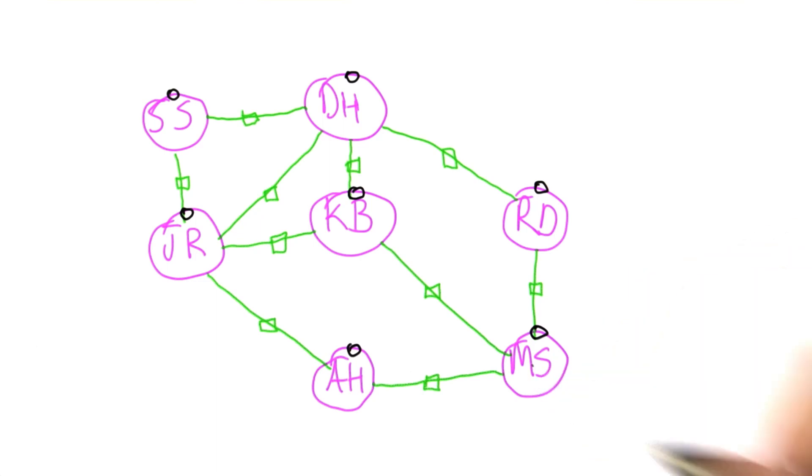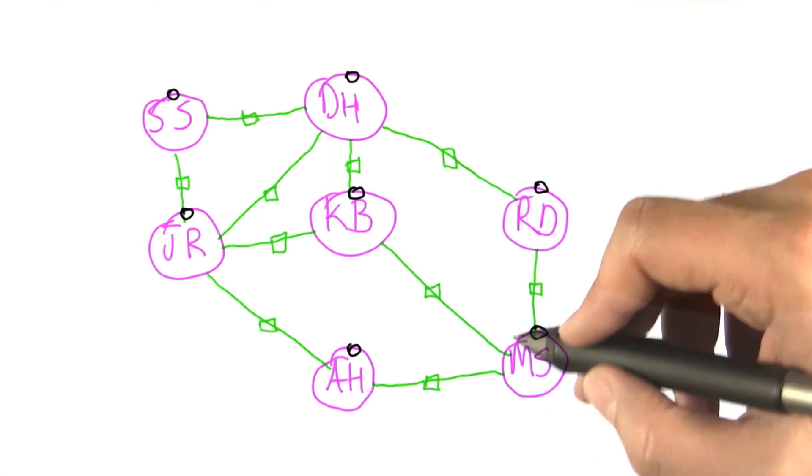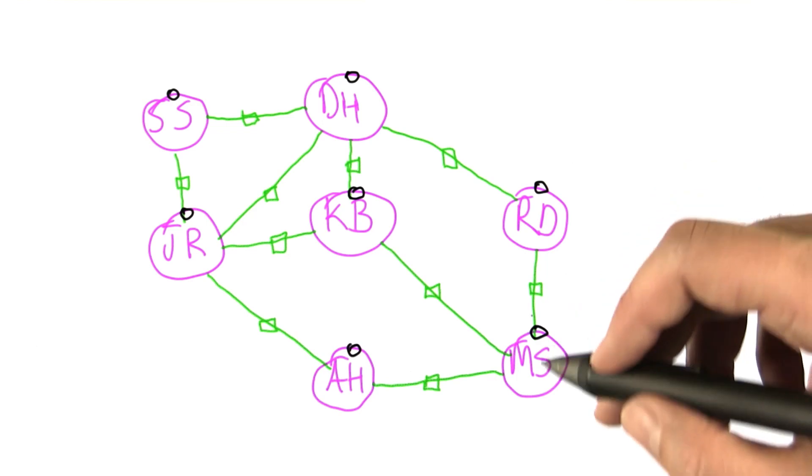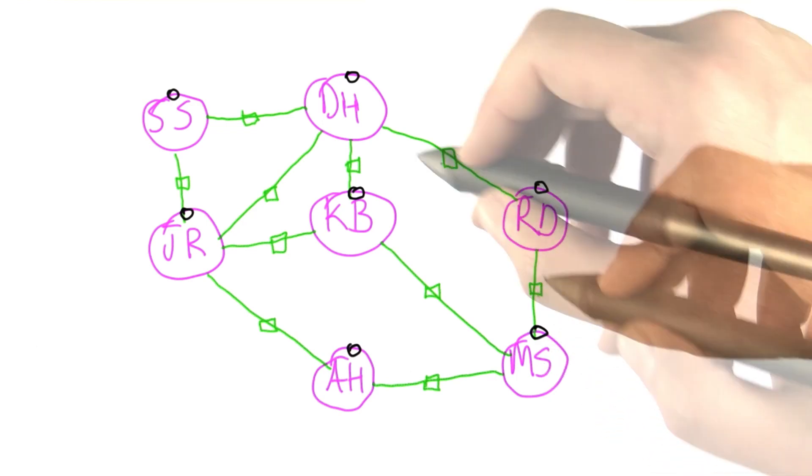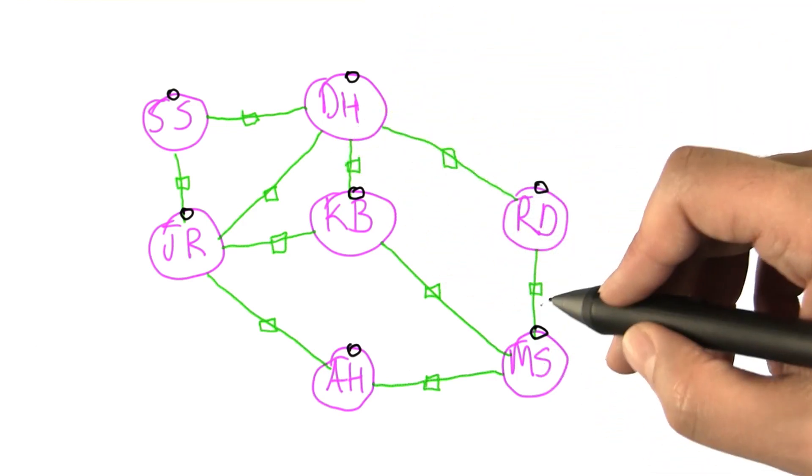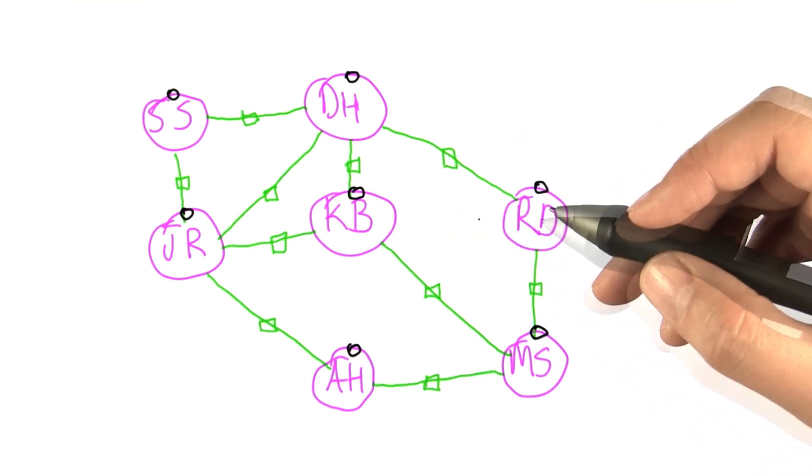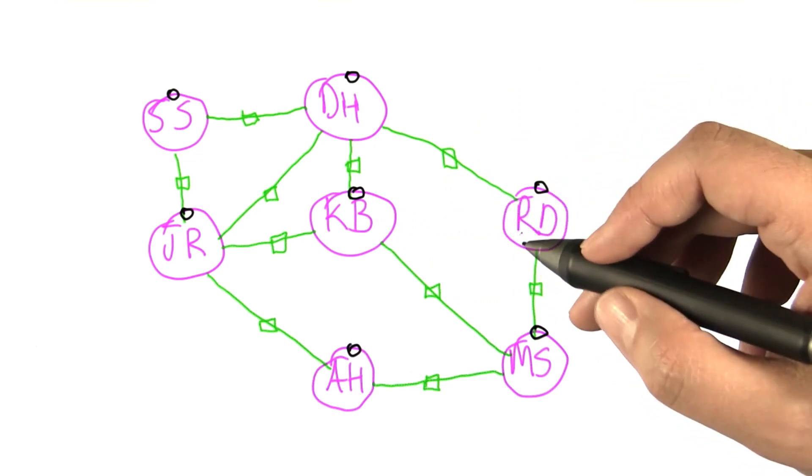So this is what I want you to do. I want you to go through and start at Meryl Streep and move along the green lines here, the movies. And each time you visit a movie, check it off as you go. So the right answer in this quiz is to have all of the edges checked off and none of them checked off twice. It's really easy to mess that up, so be very careful.